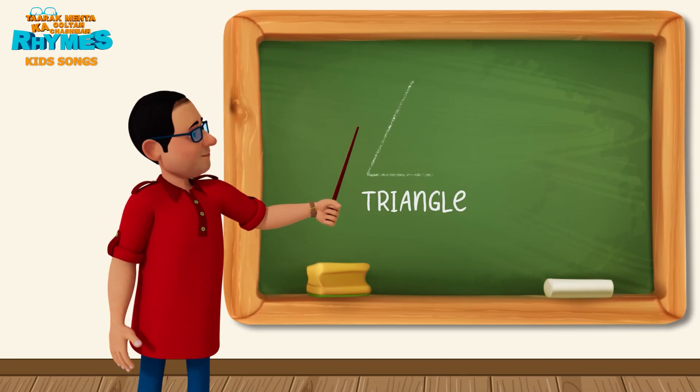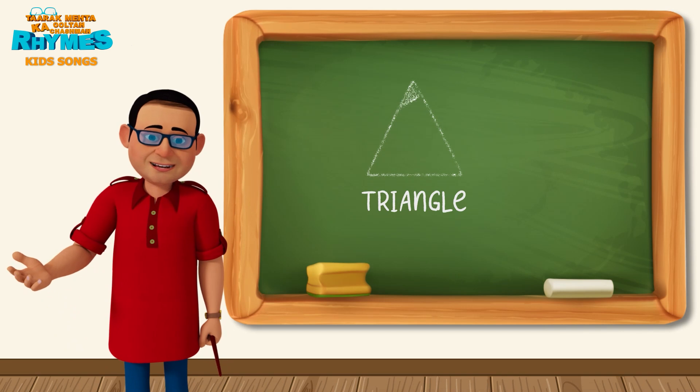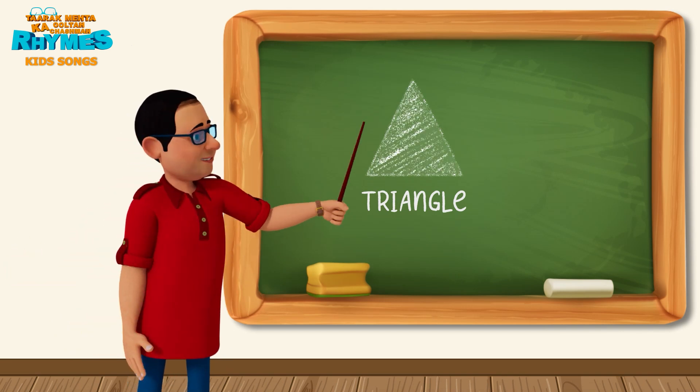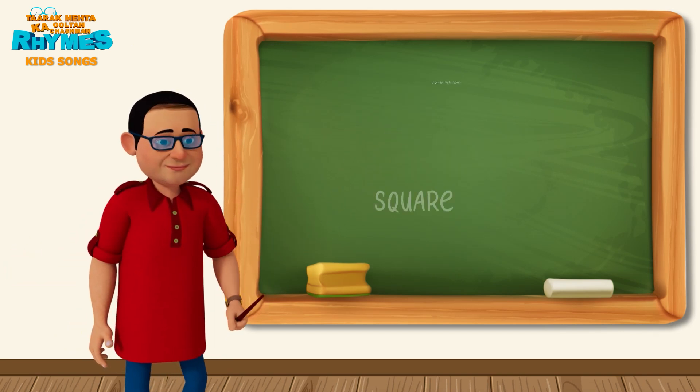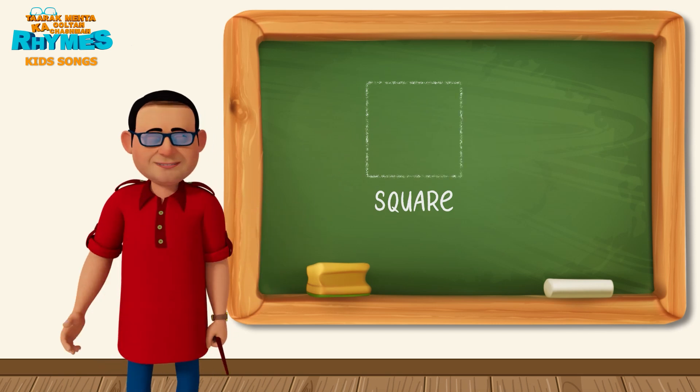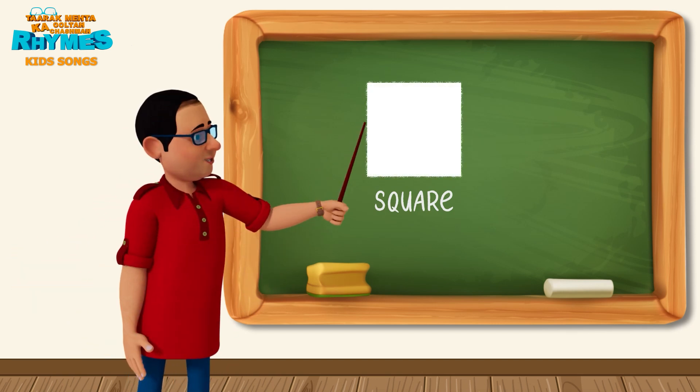This is a triangle. A triangle is pointy in shape and has three sides. This is a square. A square has four equal sides.